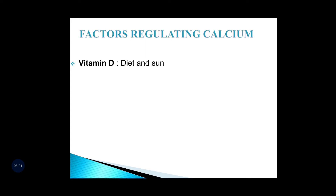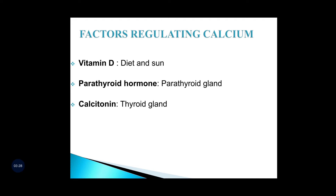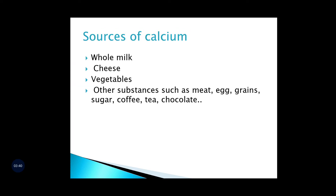The factors regulating calcium include vitamin D, which can be obtained from diet and from the sun; parathyroid hormone (PTH), produced by the parathyroid gland; and calcitonin, made from the thyroid gland. The two major cell types governing calcium regulation are osteoblasts and osteoclasts.